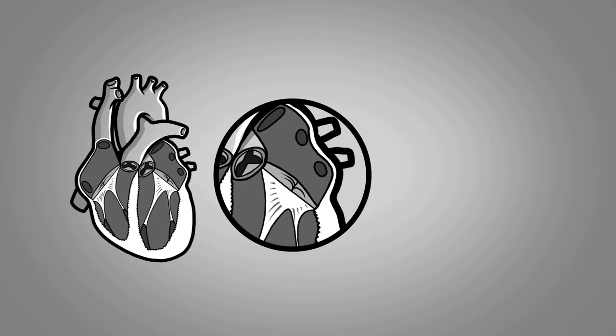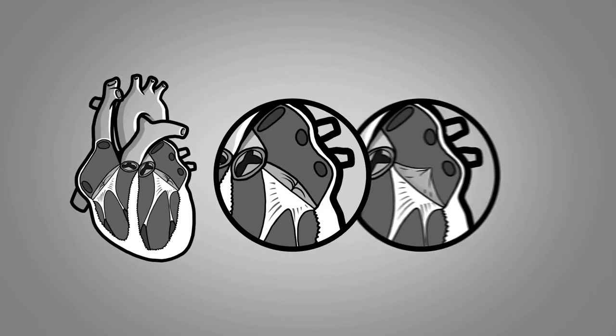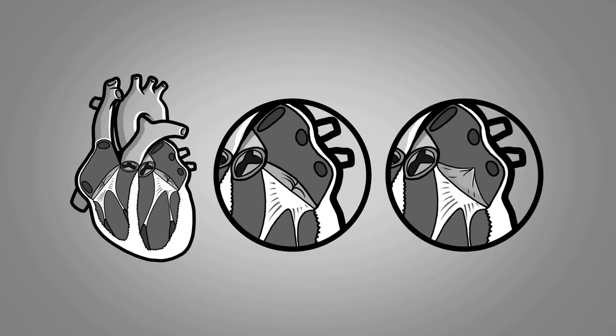Mitral prolapse is observed when, at closure, the mitral valve leaflets attach to one another while folding towards the left atrium. We can imagine the mitral valve sticking out its tongue at the left atrium.